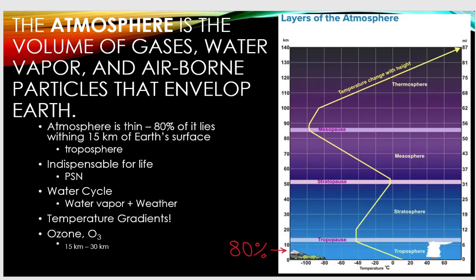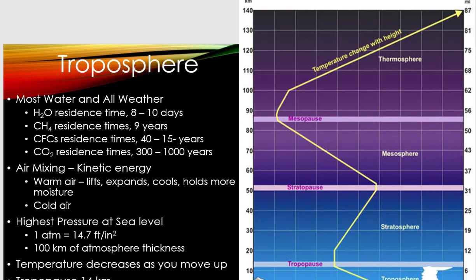The ozone layer occurs anywhere from 15 to 30 kilometers, which means it's going to be up in the stratosphere. The troposphere is where most water and all weather occurs because the key thing there is mixing — that's the key word: mixing in the troposphere.